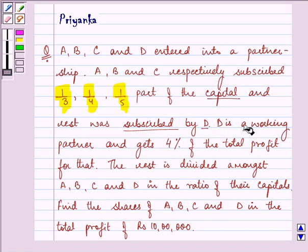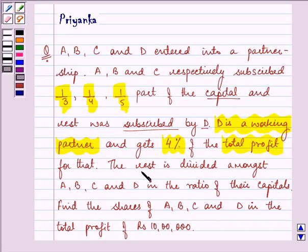D is a working partner and gets 4% of the total profit for that. The rest is divided among A, B, C, D in the ratio of their capitals.